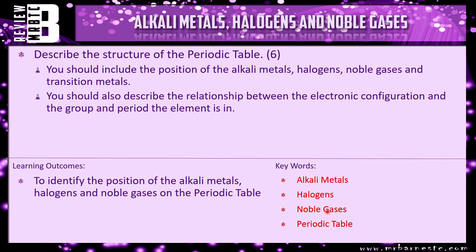That brings this video to an end. I have a review question for you: describe the structure of the periodic table. It's a six-marker, and in there you should include the position of the alkali metals, the halogens, the noble gases and the transition metals. Also describe the relationship between the electronic configuration and the group and period the elements are in.